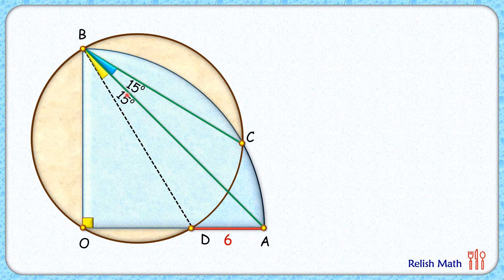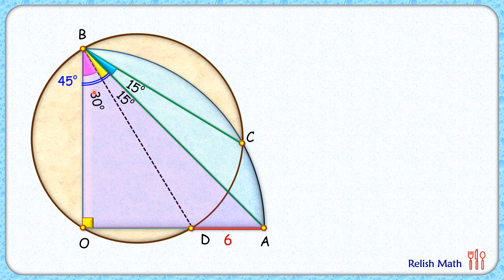Now let's remove all the construction and concentrate on triangle BOD. Here BO and OA are the radii of the blue quadrant and thus they are equal, making this triangle an isosceles right-angle triangle. So we can say this angle here is 45 degrees, and thus this remaining angle is 45 minus 15, which is 30 degrees.